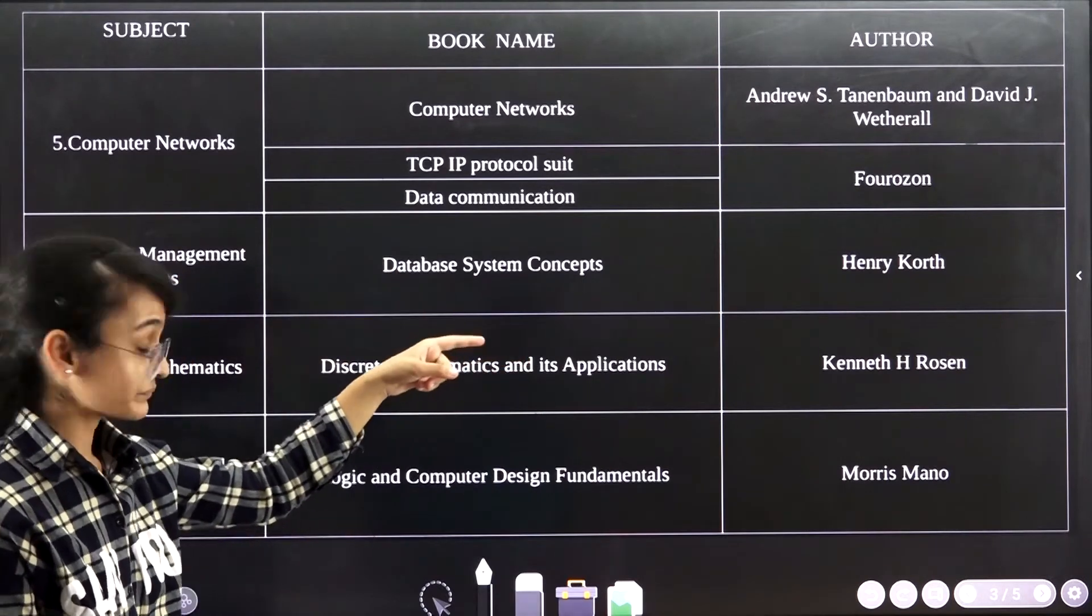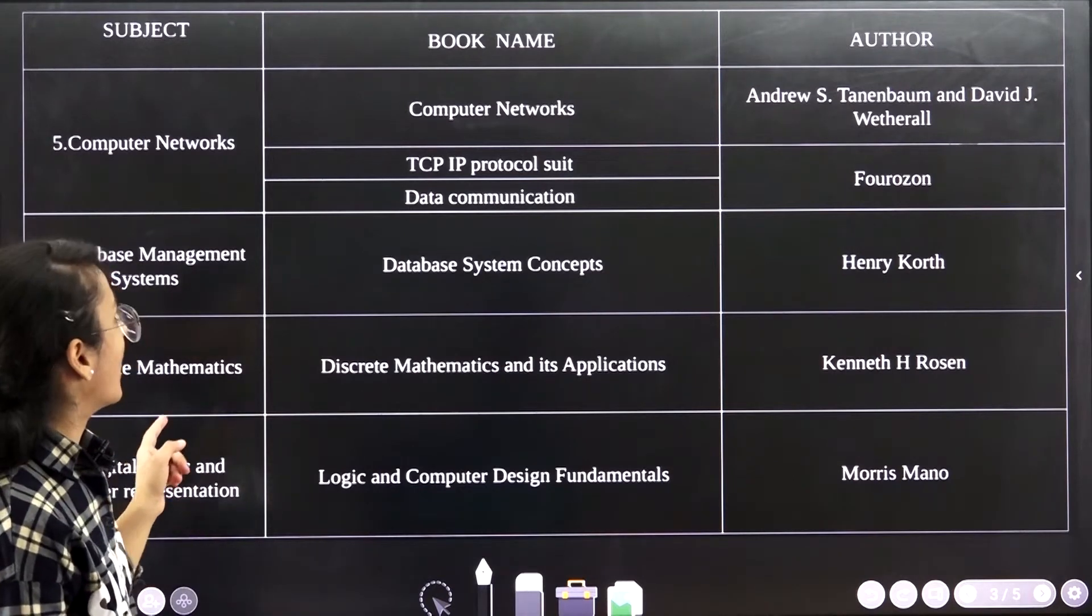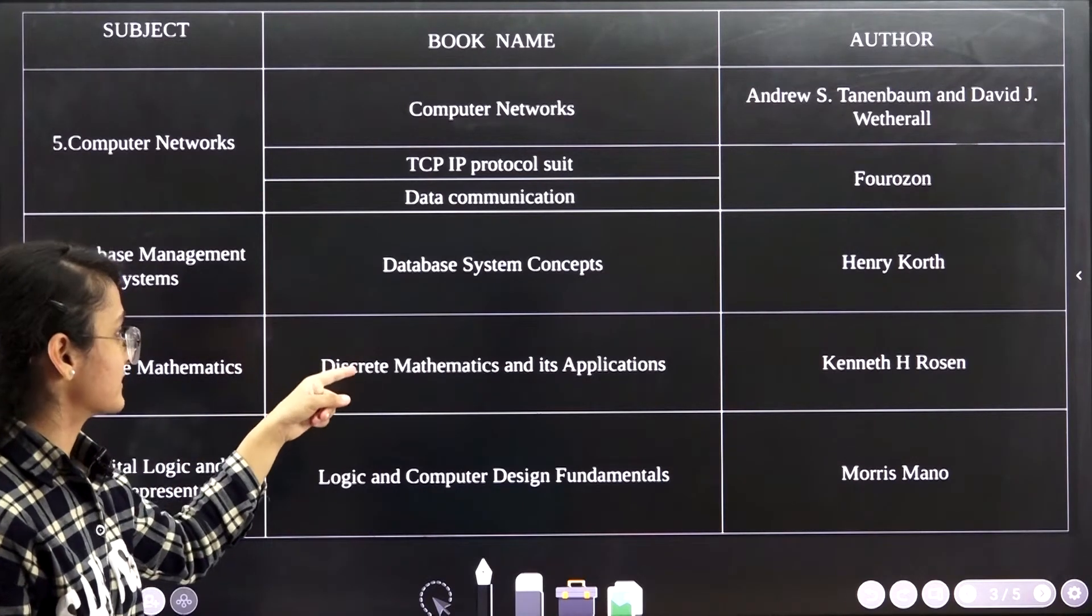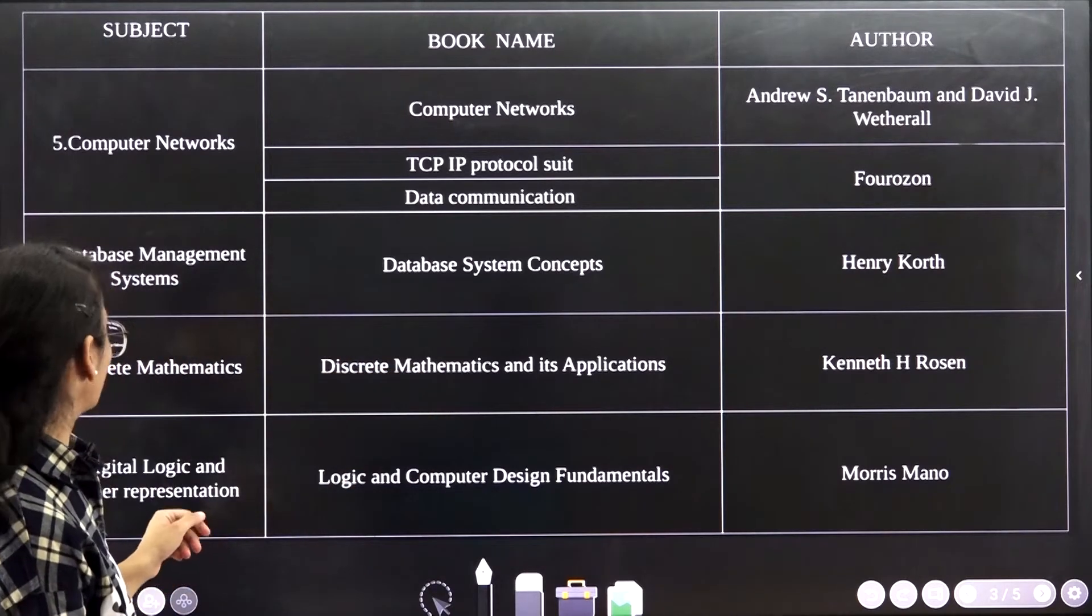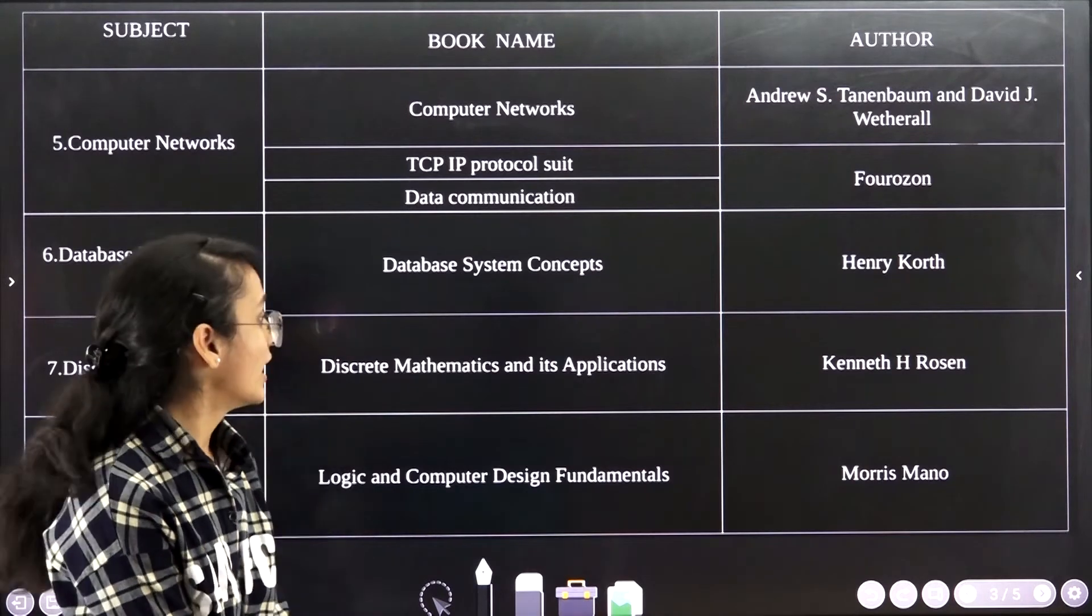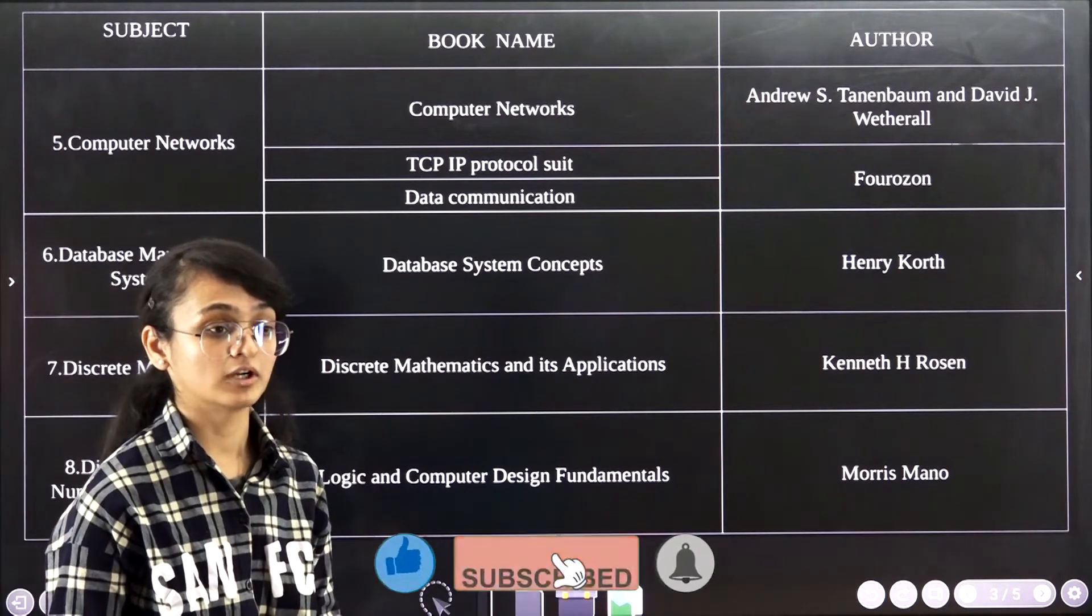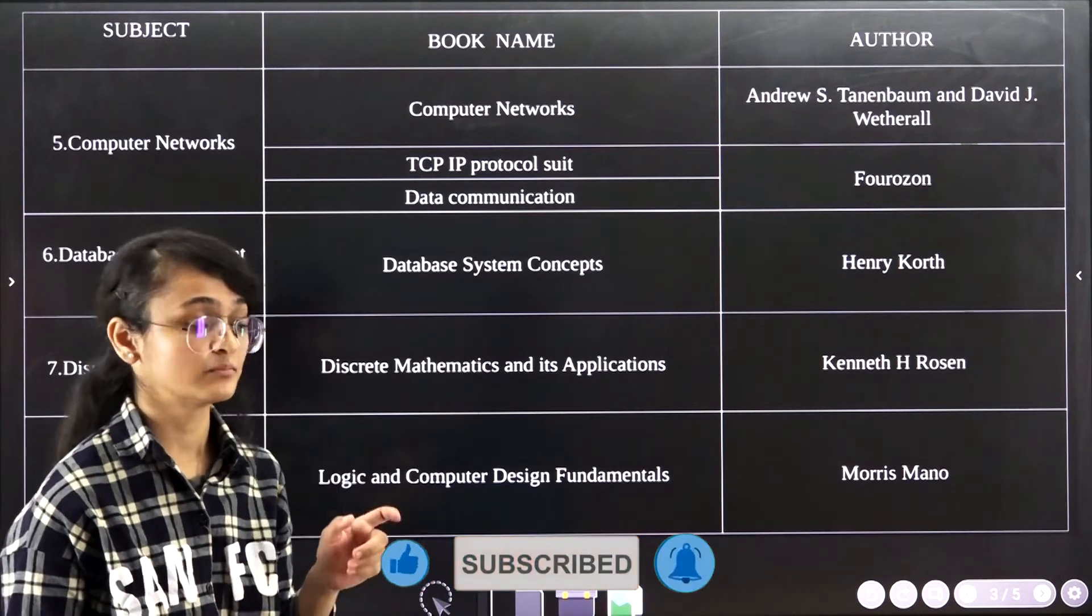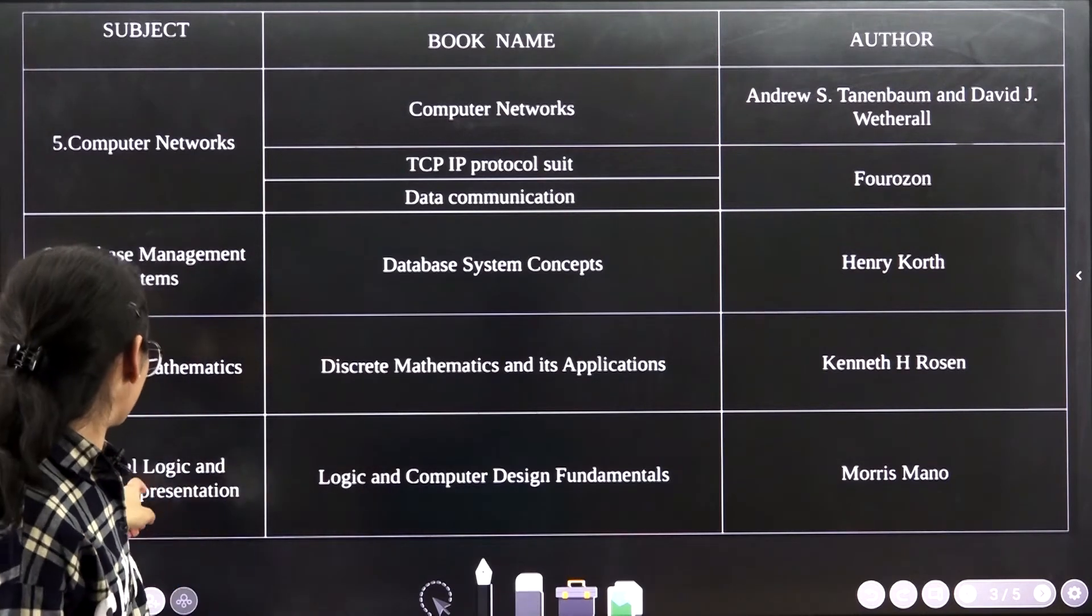The next subject is Database Management Systems. The book name is Database System Concepts by Henry Korth. Another one is Discrete Mathematics. For Discrete Mathematics, the book I follow is Discrete Mathematics and Its Applications by Kenneth H. Rosen. This book is really very helpful to study the small concepts and the very small proofs that we must learn for Discrete Mathematics.